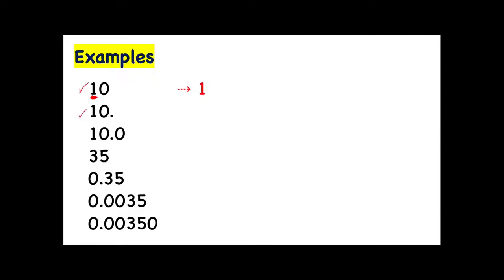For the next example, we have two significant digits because trailing zeros are significant if the digits have a decimal point — so that's why we have two significant figures because of the decimal point. The third example has three significant figures because we have a decimal point and a trailing zero after the decimal point. For the fourth example, we have two significant figures because all non-zero digits are significant.